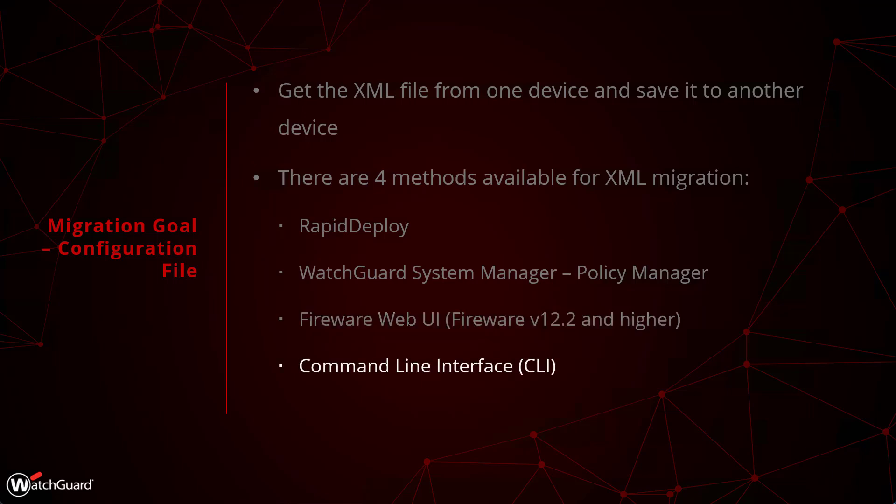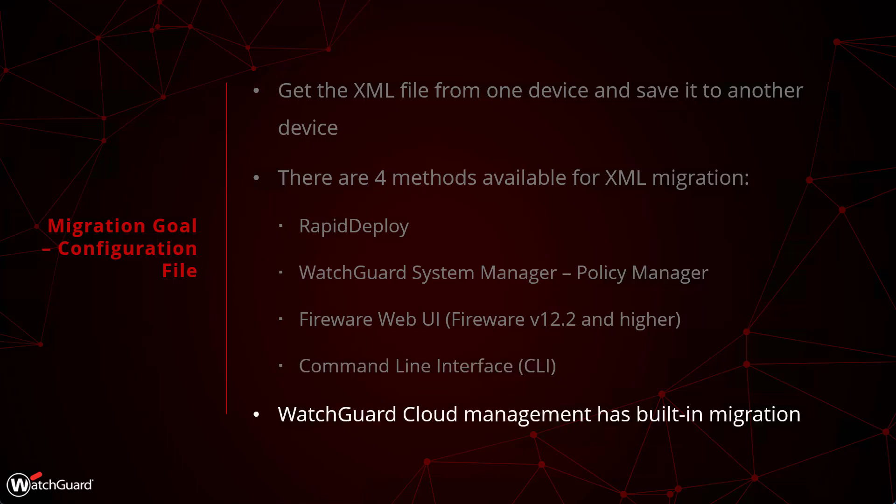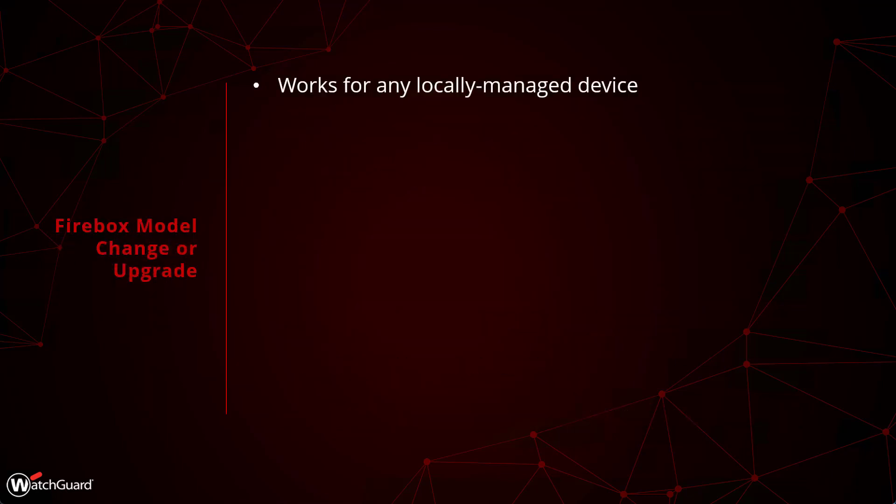Lastly, there is the CLI option, but it's far more complicated and generally not recommended — it's more for advanced users with a server set up for FTP transfers. There will not be a separate video covering the CLI process. Outside of those four options, the WatchGuard Cloud interface can manage Fireboxes, and it's not included in a future video because it has built-in migration for RMA purposes. If your box dies and you get a replacement of the same model, the configuration is automatically mapped to the replacement device.